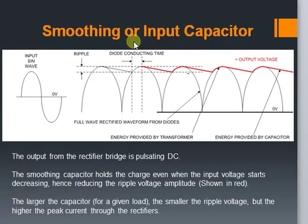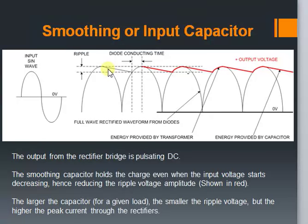As explained earlier, the output of a rectifier is a pulsating DC wave. Now let's see how the filter capacitor smoothens the wave. The capacitor charges when the input increases. But as it takes time to discharge, the charge is held even when the input starts decreasing. This action helps in reducing the ripple to a great extent and gives a partially constant output as shown in the diagram in red color.